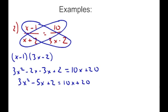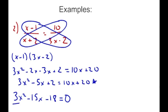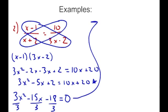Since we have a quadratic, we need to set it equal to zero and factor. Moving everything to one side gives 3x squared minus 15x minus 18 equals zero. Each term shares a factor of 3, so dividing through by 3 gives x squared minus 5x minus 6 equals zero. Now we factor: we need two numbers that multiply to negative 6 and add to negative 5, which are negative 6 and 1. So we get x squared minus 6x plus x minus 6 equals zero.